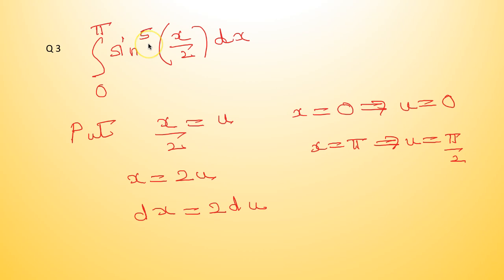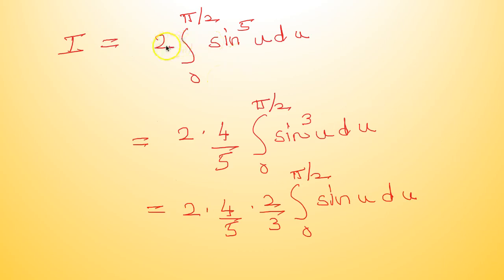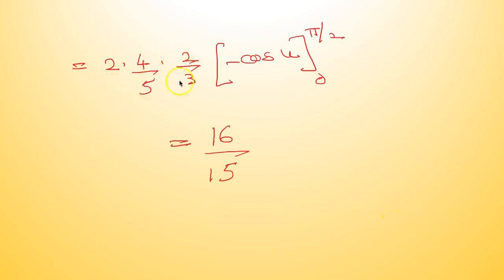Coming to the next question: integral of sin raised to 5(x/2) dx. Put x/2 = u, so x = 2u; when x = 0, u = 0; when x = π, u = π/2; and dx = 2 du. This becomes 2·integral from 0 to π/2 of sin raised to 5u du. Applying the reduction formula: 2 × (4/5) × (2/3) × integral of sin u du = 2 × (4/5) × (2/3) × [−cos u] from 0 to π/2 = 16/15.